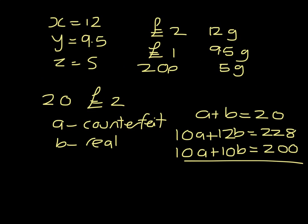Subtracting those, it tells me that 2B has to equal 28, so B must be 14. So I have 14 real coins and 6 counterfeit coins.